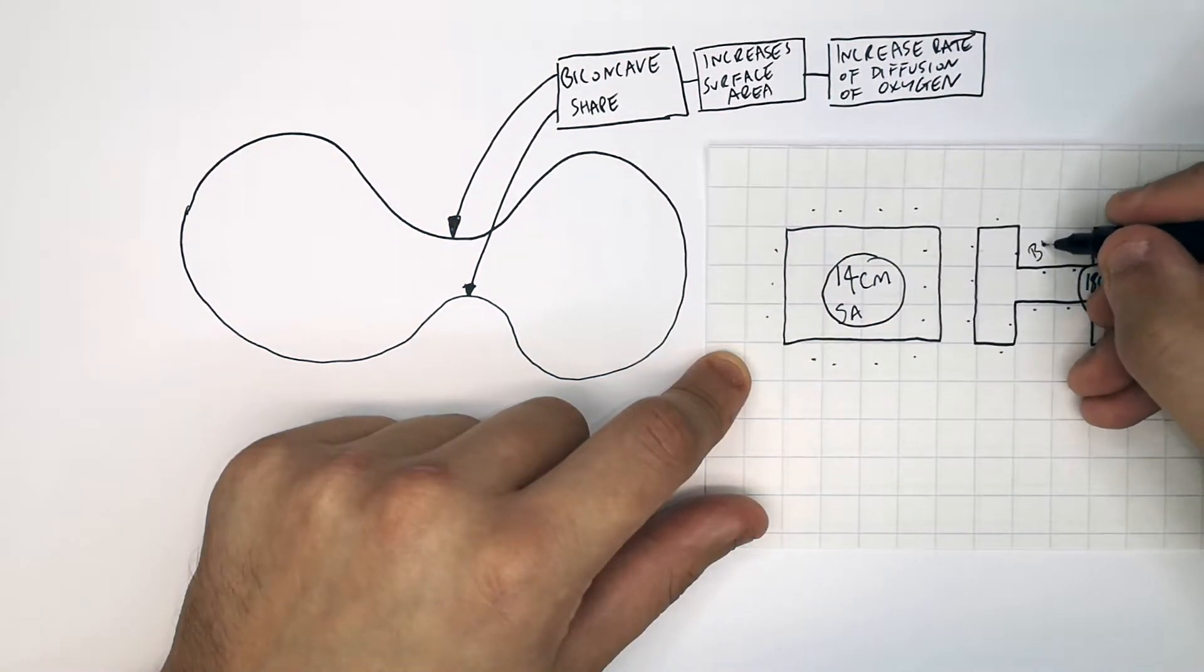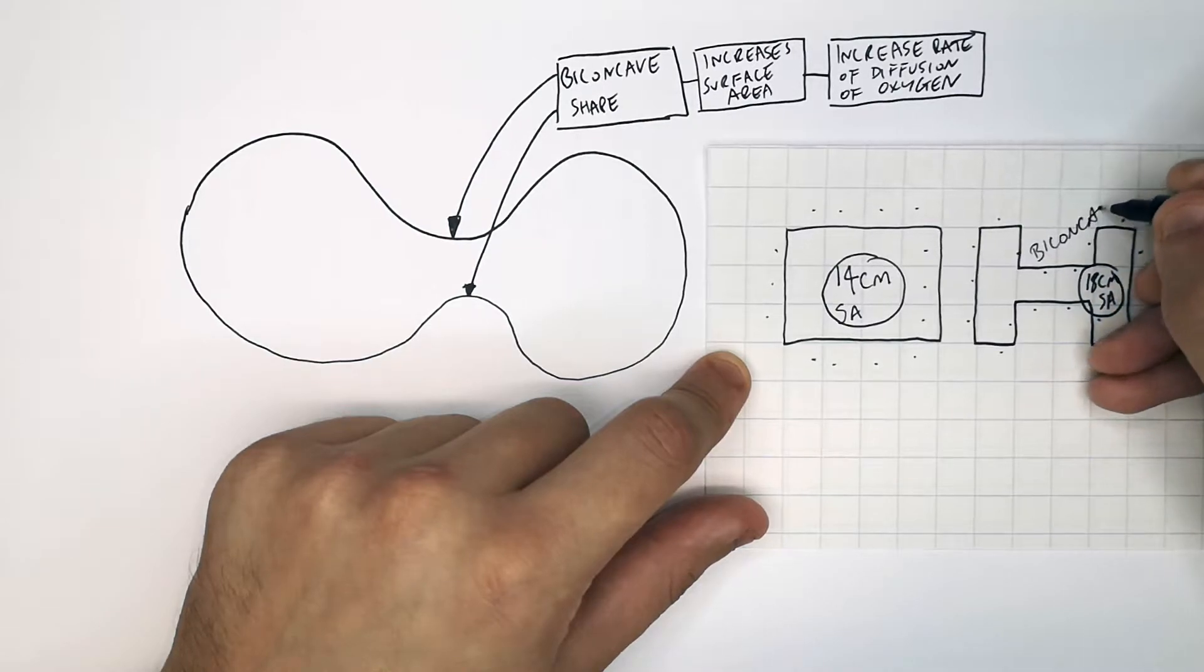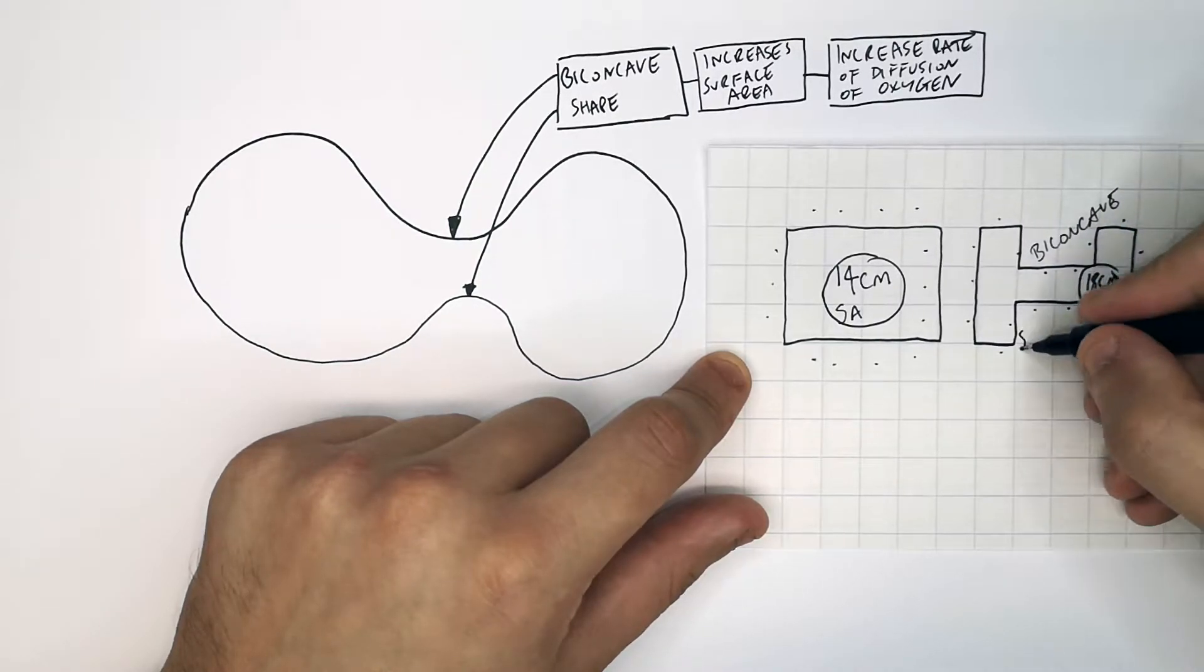So as you can see here, the biconcave shape gives the red blood cell a larger surface area to increase the rate of diffusion of oxygen in and out of the cell.